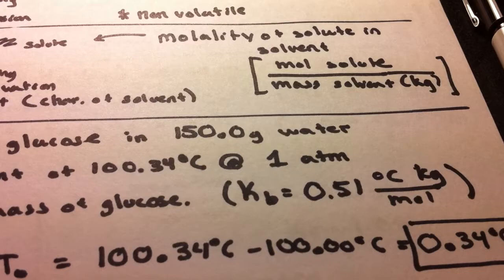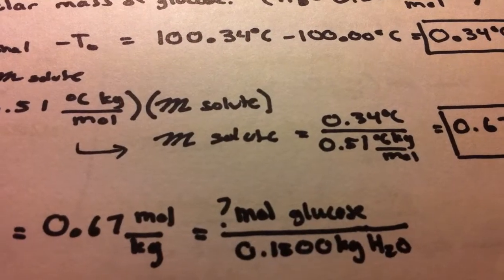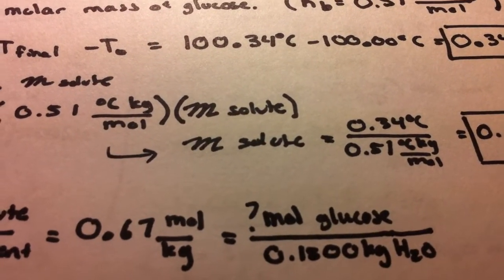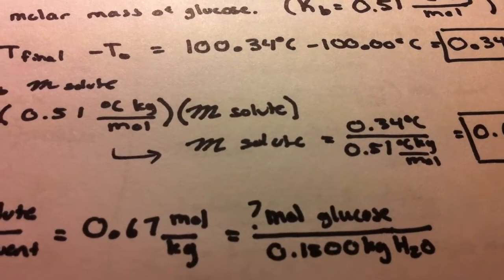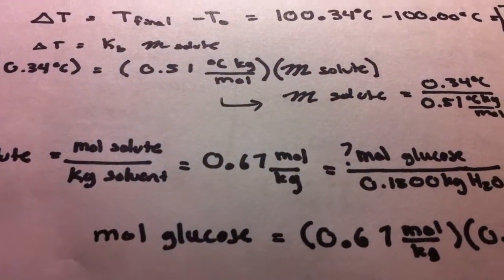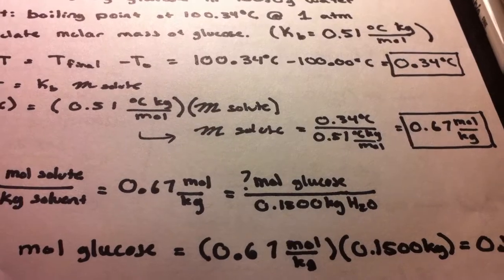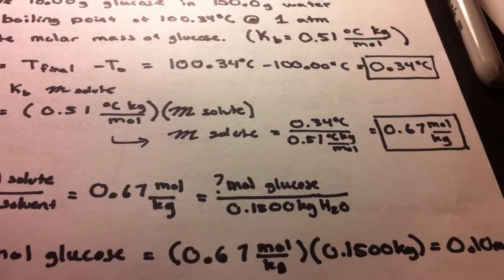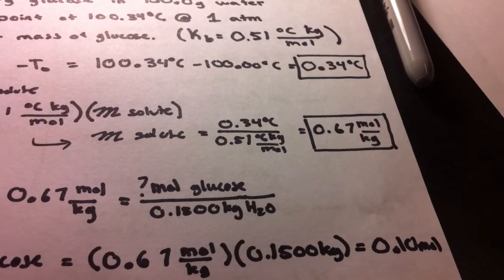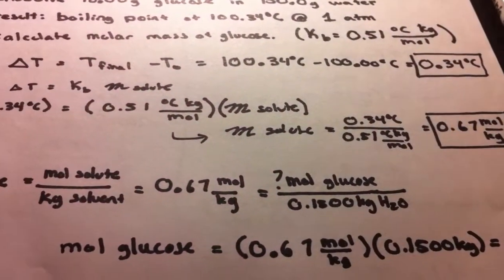Because we have 150 grams of water, it should be 0.15 kilograms of H2O. So if we cross multiply that, we should get 0.67 times 0.15, and that's going to equal 0.10 moles of glucose.